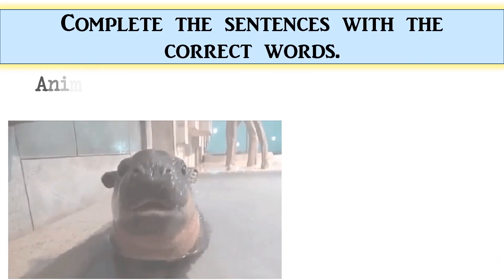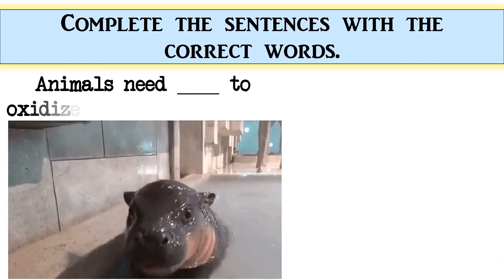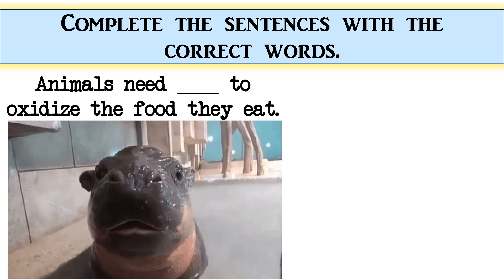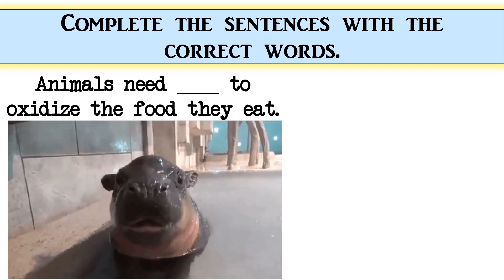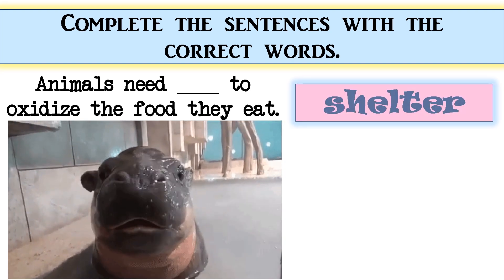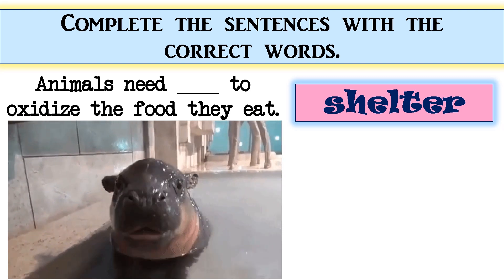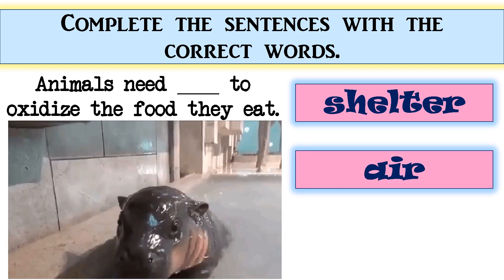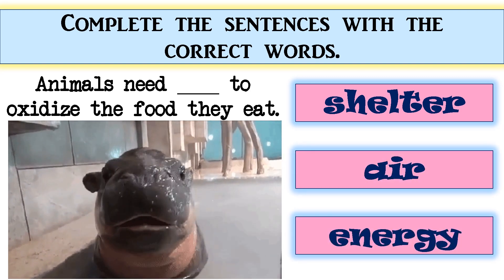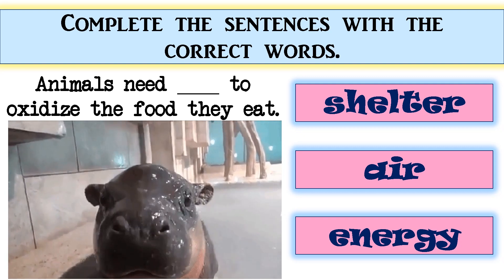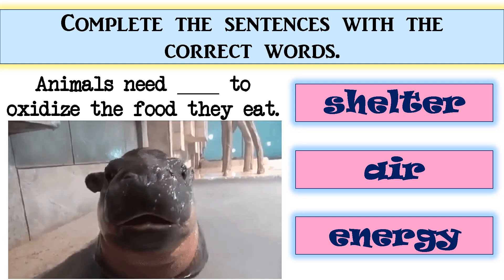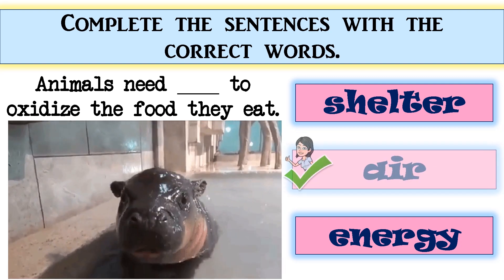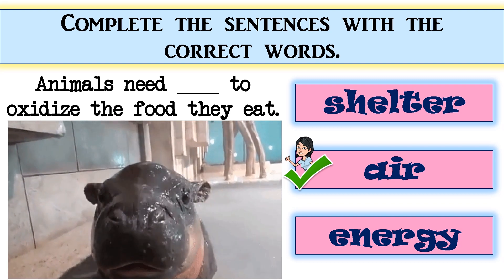Animals need blank to oxidize the food they eat. The options are: shelter, air, or energy. The correct answer is air. Very good!